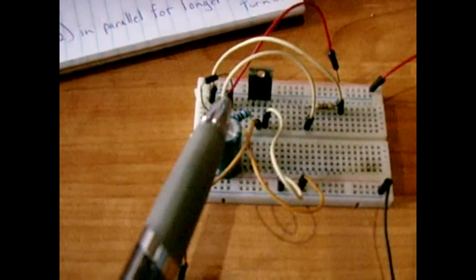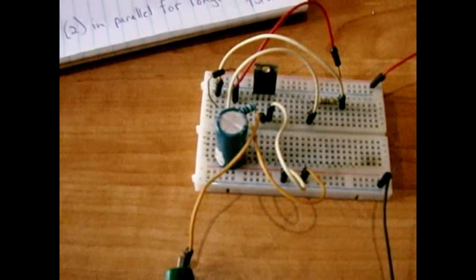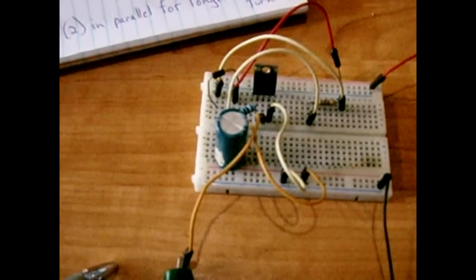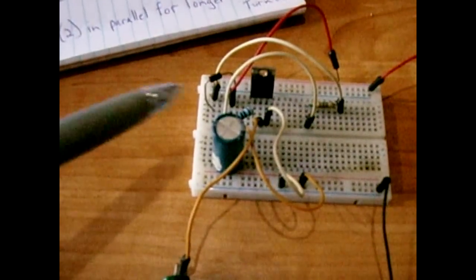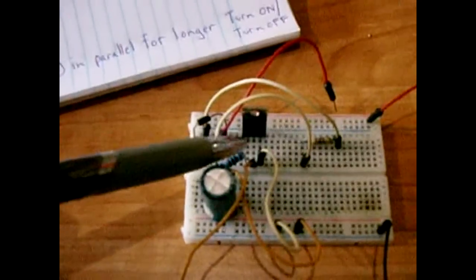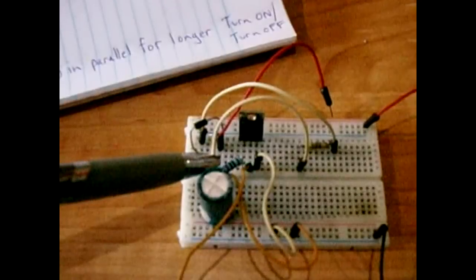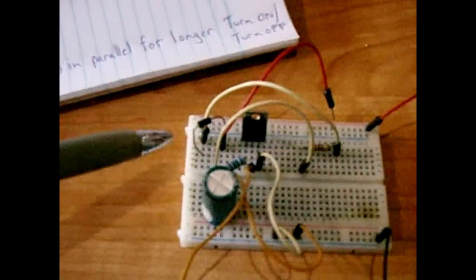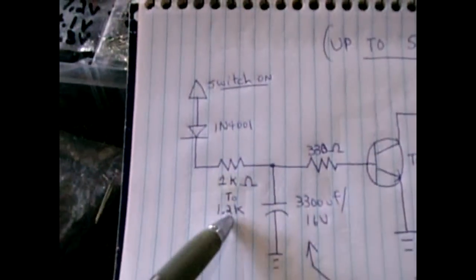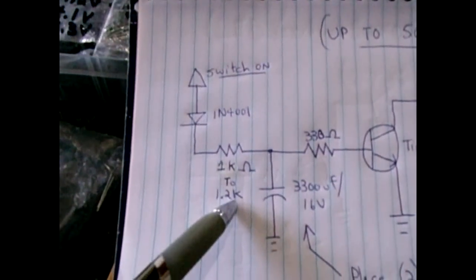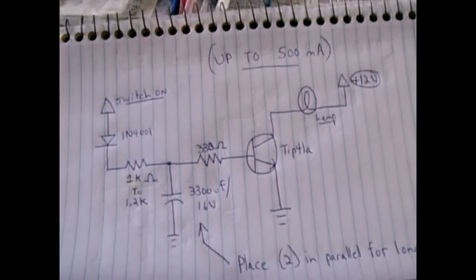Now if you want to power one of these 200 milliamp bulbs that's used on door panel lighting and turning signals and running lights, you have to make a few adjustments to the circuit. You now only need one capacitor and that capacitor could be 2200 microfarad or 3300 microfarad. The resistor that was leading to the base of the transistor was a 330, you're going to make that a 1k. And this resistor right here that was a 1.2k is going to become a 4.7k. And then it will work just fine for a 200 milliamp bulb.